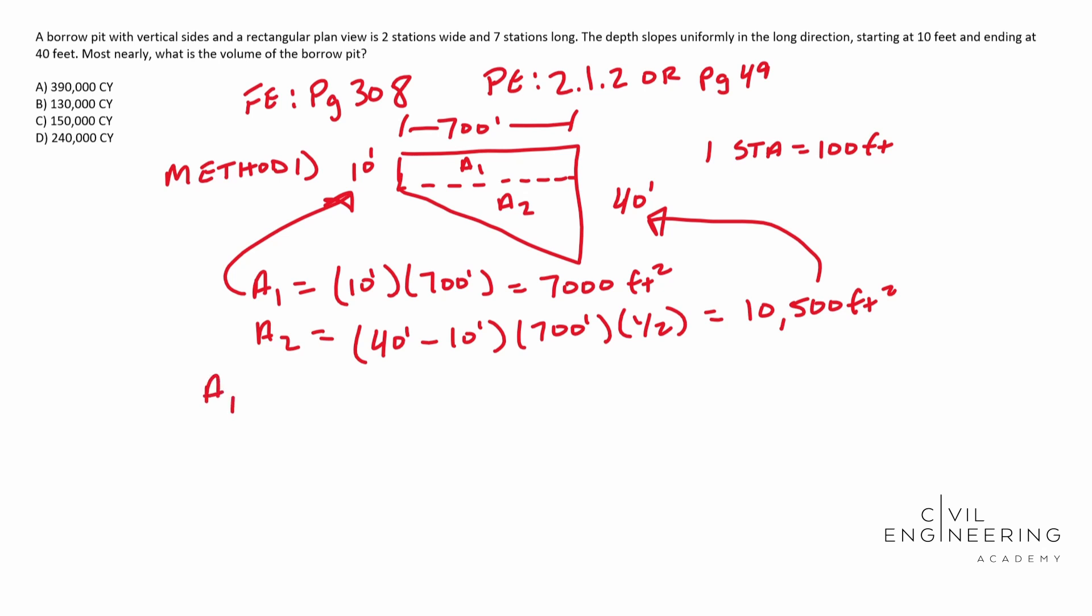So we need to add those two together. So A1 plus A2 equals 17,500 square feet.